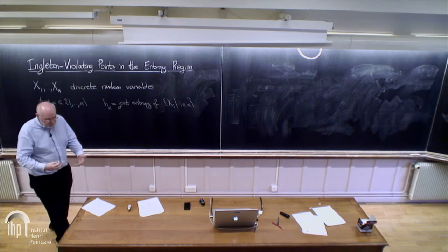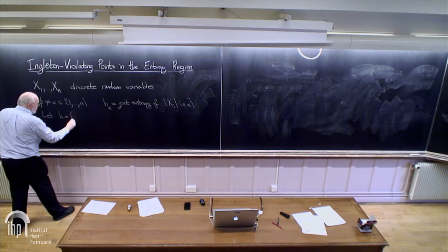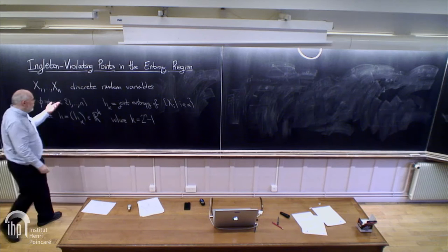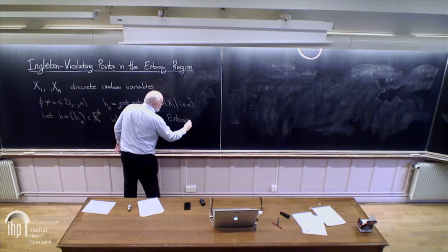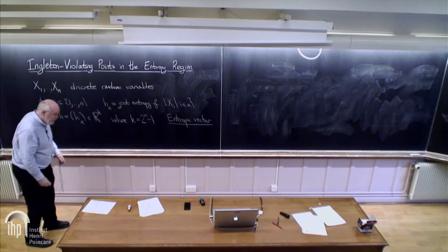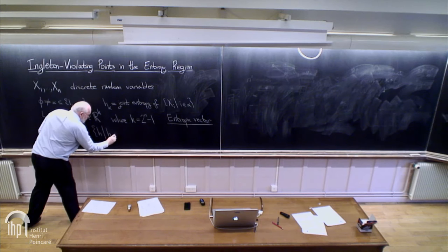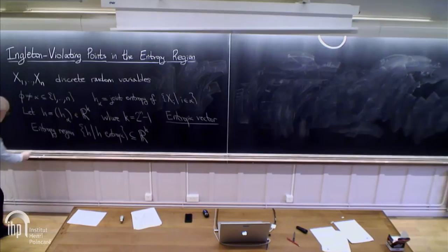This contains information about conditional entropies and mutual information. Putting these together, we get a vector in K dimensions where K is 2 to the N minus 1, excluding the empty set. This is what is meant by an entropic vector. The entropy region is the collection of all entropic vectors.